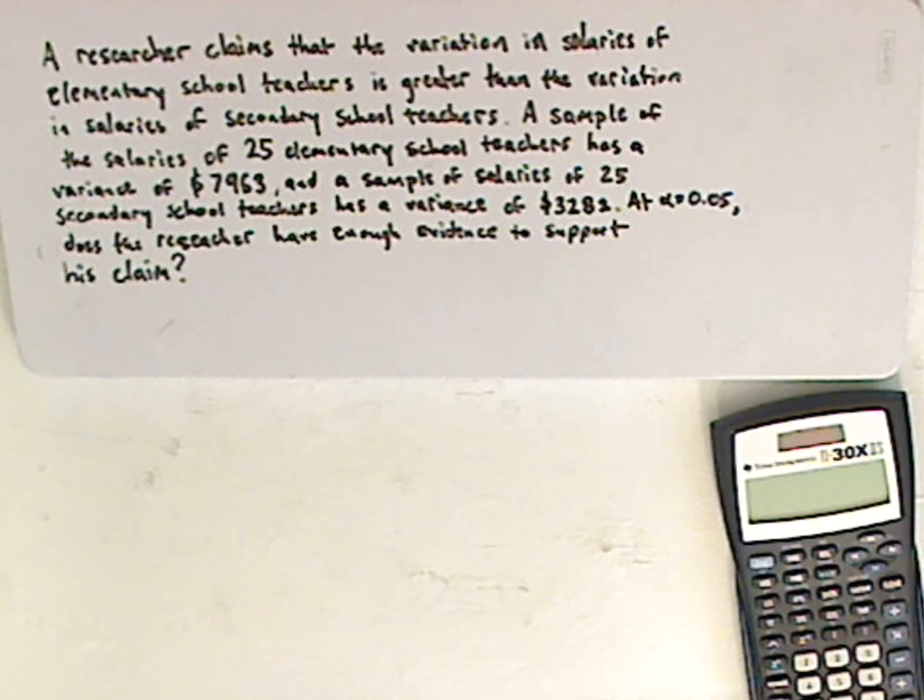A researcher claims that the variation in salaries of elementary school teachers is greater than the variation in salaries of secondary school teachers. A sample of salaries of 25 elementary school teachers has a variance of $7,963, and a sample of salaries of 25 secondary school teachers has a variance of $3,282.